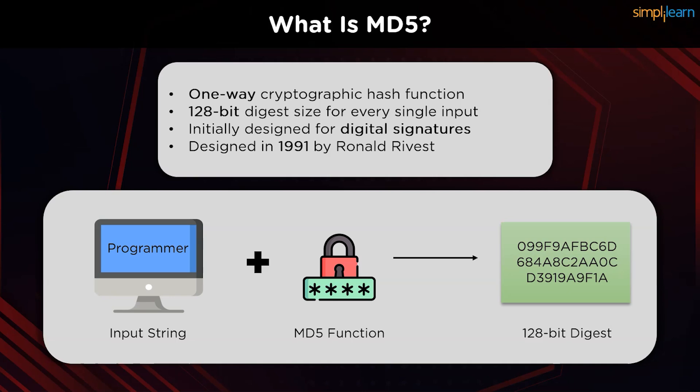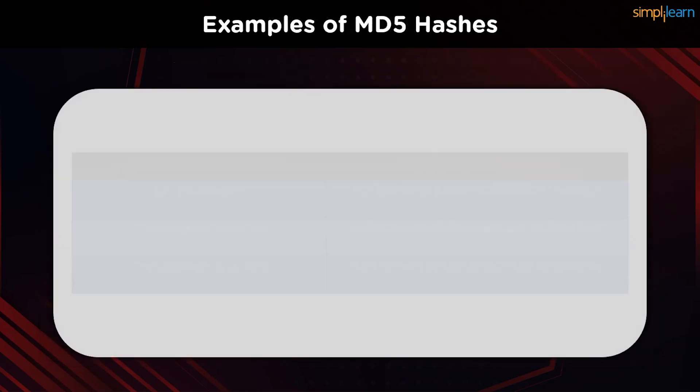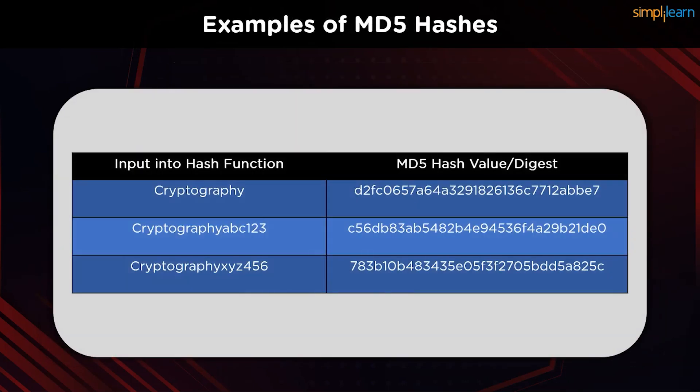The 128-bit digest received is going to be radically different from the plain text. The goal of any message digest function is to produce digests that appear to be random. To be considered cryptographically secure, the hash function should meet two requirements: first, it must be impossible for an attacker to generate a message that matches a specific hash value; and second, it must be impossible for an attacker to create two messages that produce the same hash value.